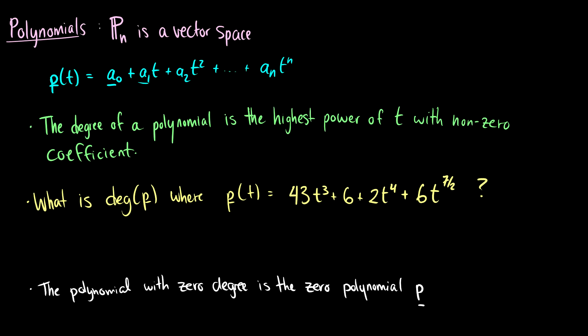The degree of a polynomial is going to be the highest power of t that is non-zero. So in this first example, assuming that a is not equal to zero, then the degree of this polynomial would be n. So that's n degree. So for an example,